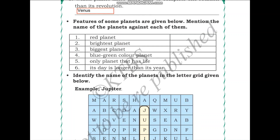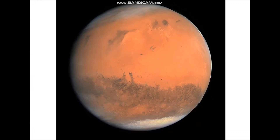Let us start with the first one. Which planet is the red planet? The answer is Mars. Mars is the red planet because it is red in color. It gets that color because of iron oxide that is present in the soil. Here is the picture of Mars — you can see how it looks red in color.